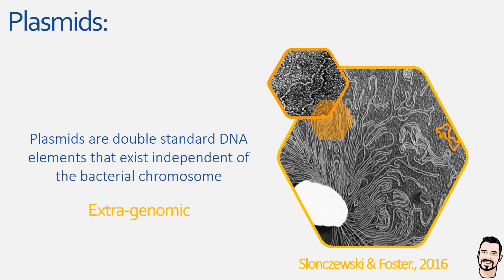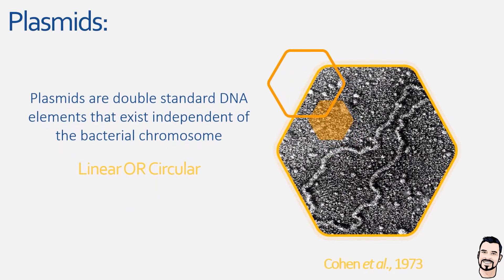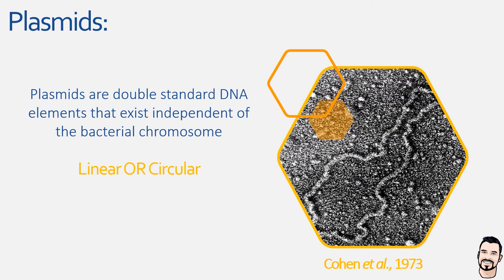Plasmids give bacteria additional traits which they wouldn't usually have, and these traits can be both good and bad. Key features to know: firstly, plasmids can be linear or circular, however the majority tend to be circular as linear plasmids are susceptible to degradation at their terminal ends by various host and environmental enzymes. Some linear plasmids have adapted by developing closed loop ends to ward off degradation. Secondly, plasmids carry non-essential genes — being part of the genome but not the chromosome, they encode genes that usually provide some form of enhanced physiology.